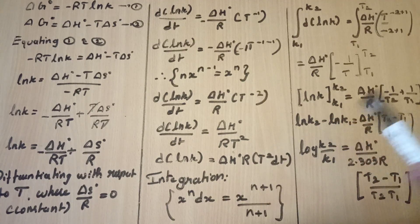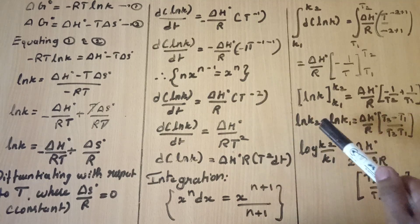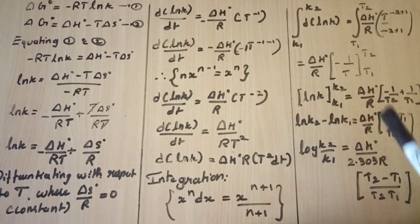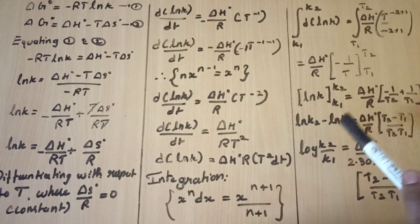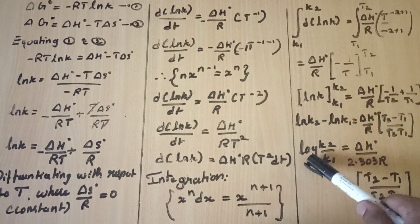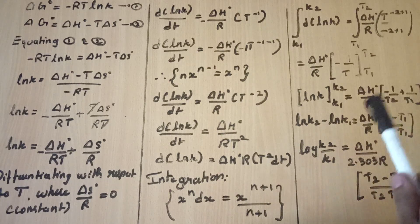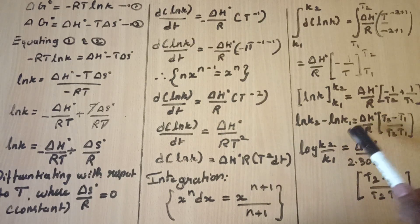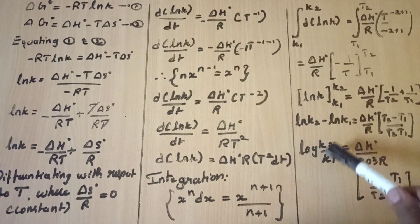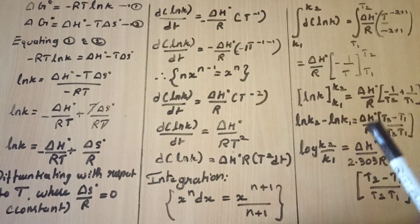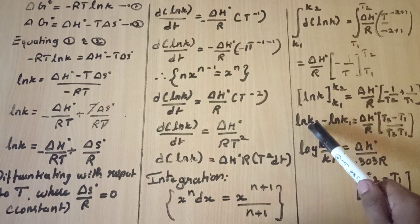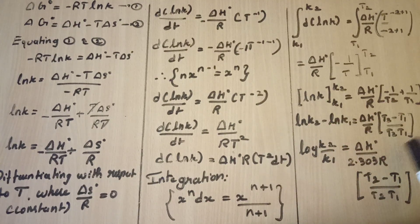So if you add ln K2 minus ln K1, and then convert to log, you get log of K2 by K1. So log K2 by K1 is the final answer. That's all, guys. Please like the video and give it a share. This is Whiteheart signing off. Goodbye.